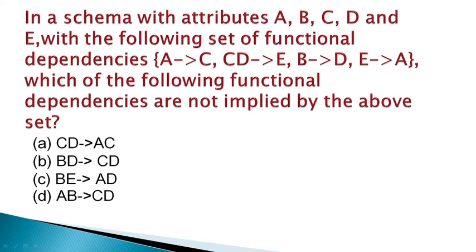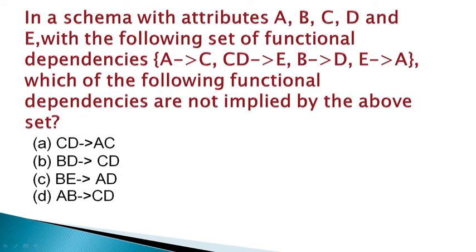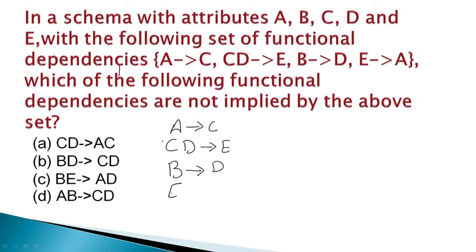We need to check which of the four given functional dependencies is not implied by the above set. First, let us note down all the given functional dependencies: a → c, cd → e, b → d, and e → a. Now let us check the first option: cd → ac.